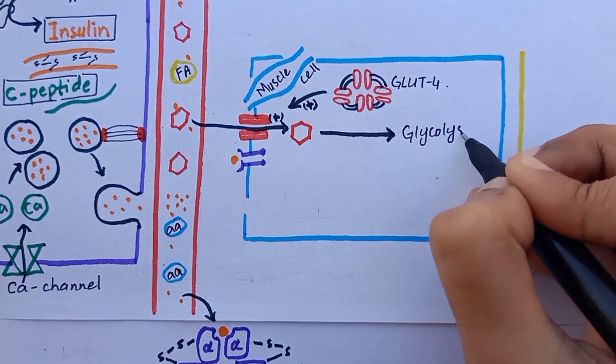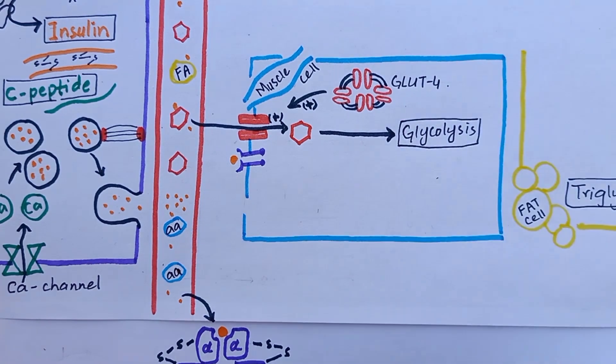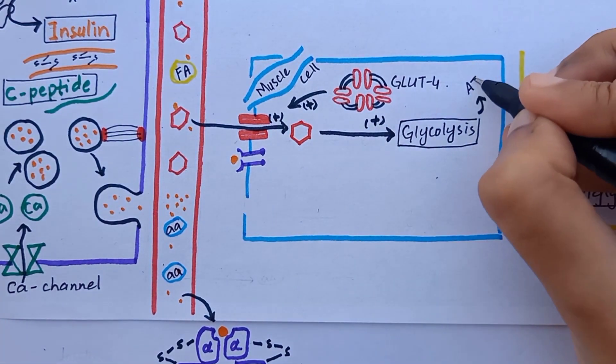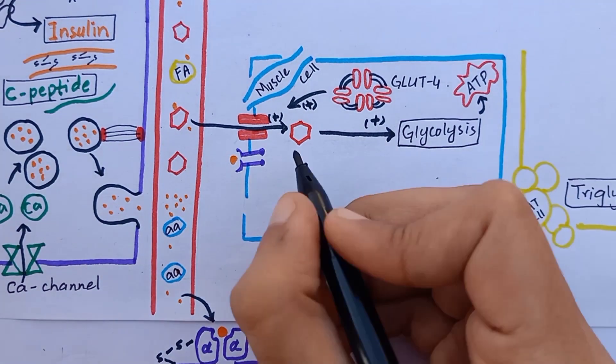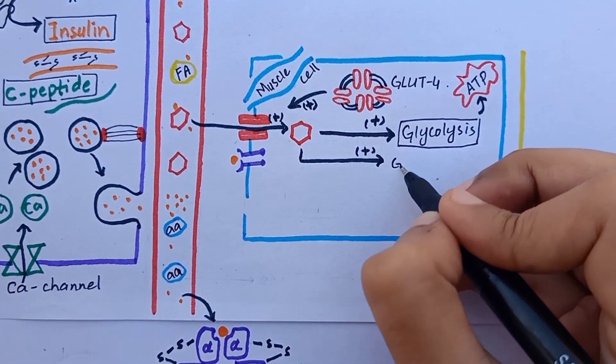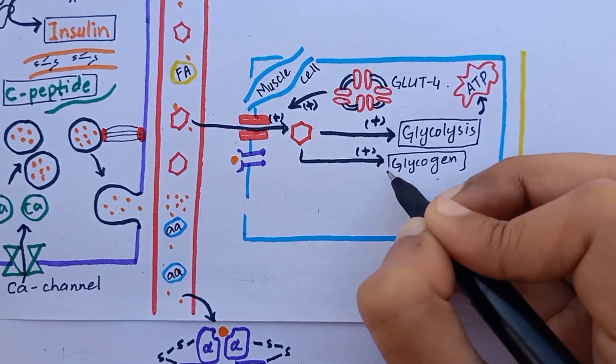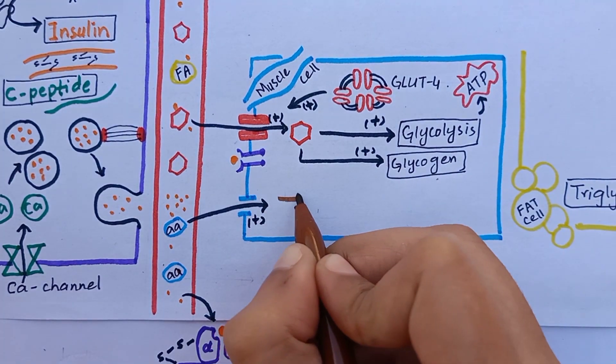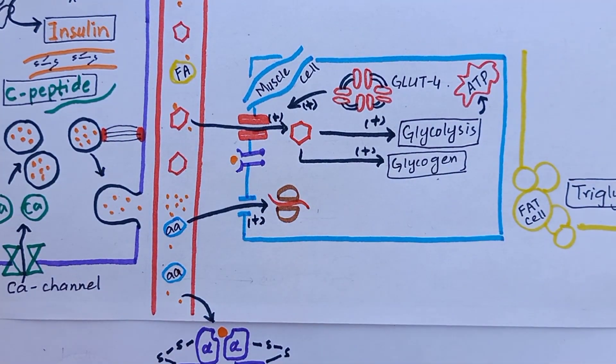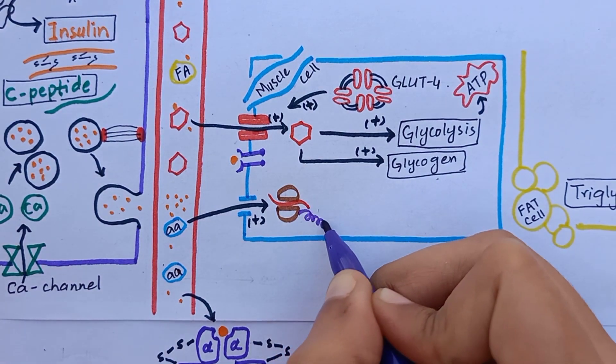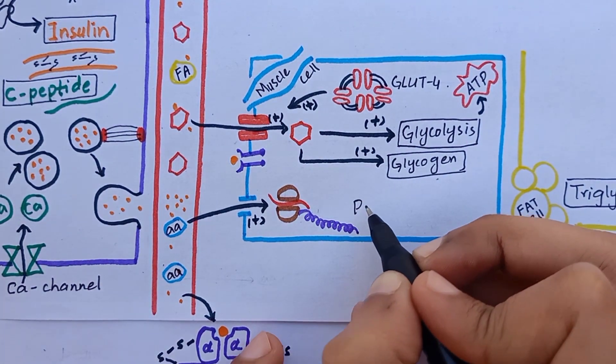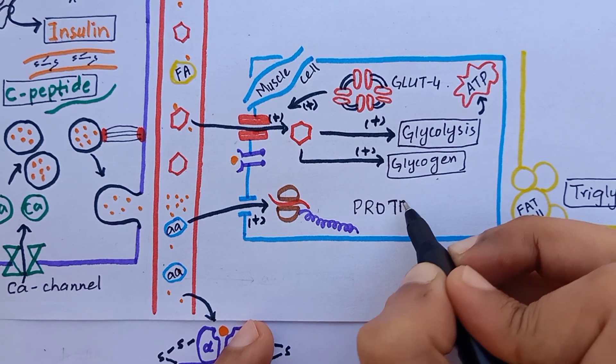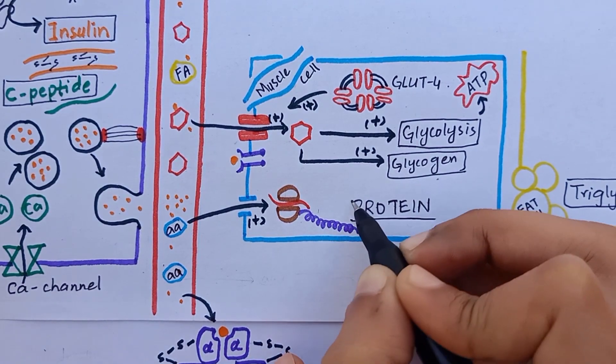Inside the cell, glucose undergoes glycolysis to produce energy that is going to be utilized by the cells. Glucose will be stored as glycogen that can be used later for energy. In addition to that, in muscle cells, insulin stimulates transport of many amino acids into the cell. Insulin turns on ribosomal machinery and increases the translation of messenger RNA, thus forming new proteins.